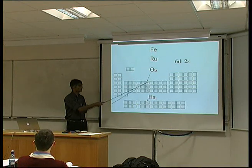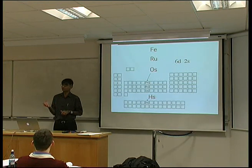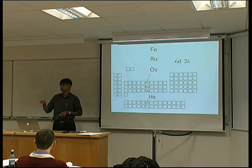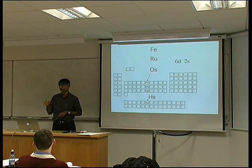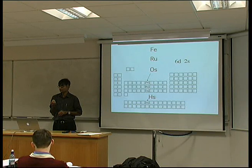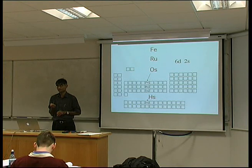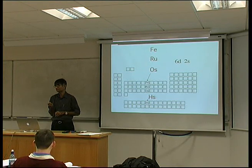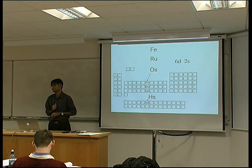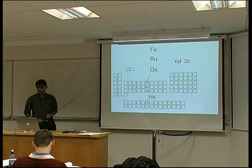If you do first-principles calculations of the energy of different crystal structures of iron and you ignore magnetism, you also predict that the ground state is hexagonal close-packed. Given that we use approximately a billion tons of iron every year in the form of body-centered cubic crystal structure, we really have magnetism to thank for civilization as it exists. Just remove iron from your life and you realize we couldn't do all the things that we do right now.